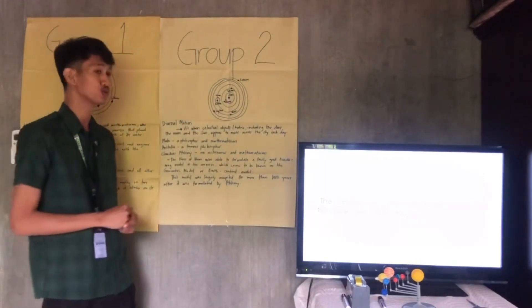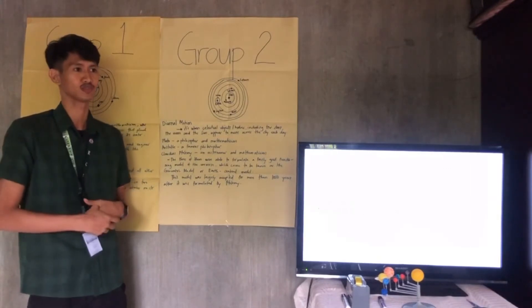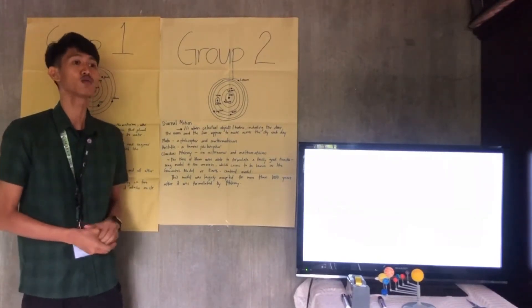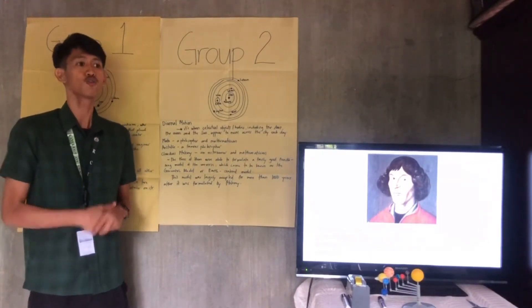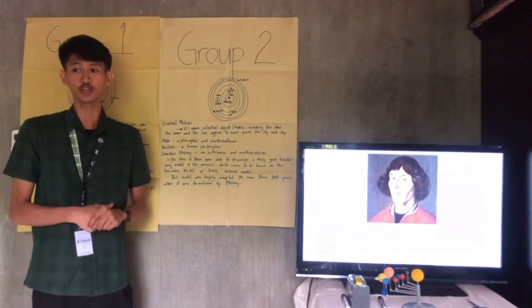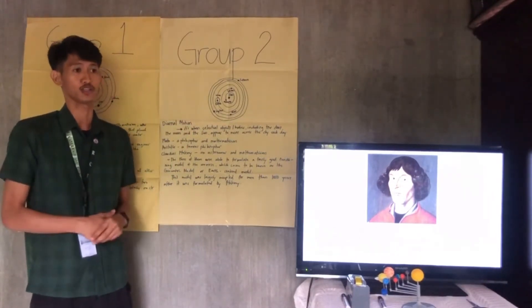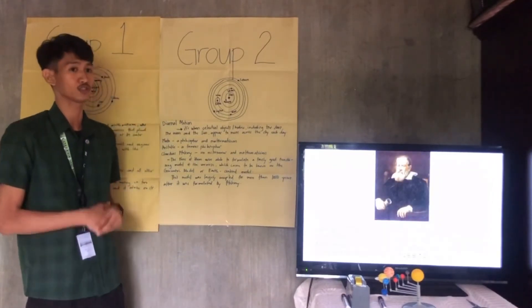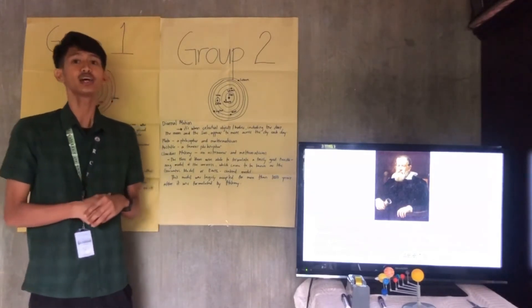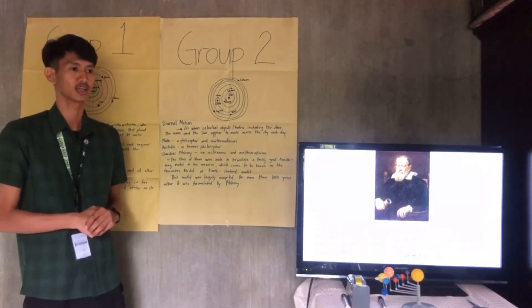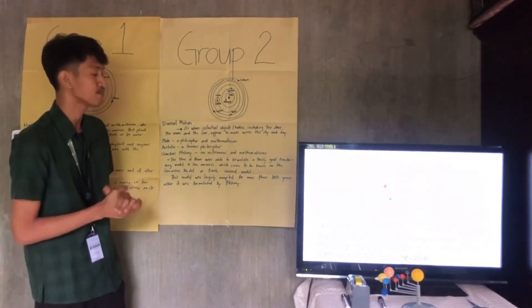And for group two, who were the proponents of the heliocentric model of the universe? Very good! There were Nicholas Copernicus, a Polish astronomer and mathematician, who formulated a model of the universe that placed the sun rather than the earth at its center. And Galileo Galilei, an Italian astronomer, physicist, and engineer who was famous for his work with the telescope. And what does the heliocentric model say about the universe?